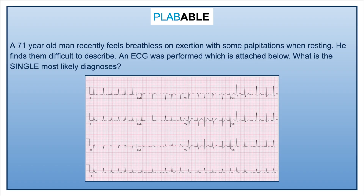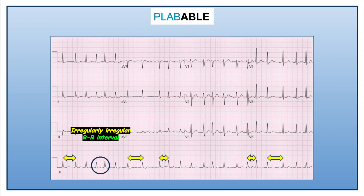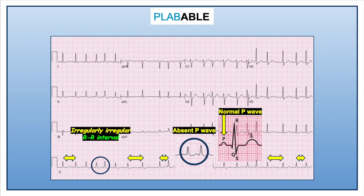Whenever a patient comes to us and we are suspecting atrial fibrillation, like in this case, we hook up the ECG leads to the patient. What confirms the diagnosis of atrial fibrillation is the characteristic irregularly irregular rhythm that we see on the ECG and absent P waves.